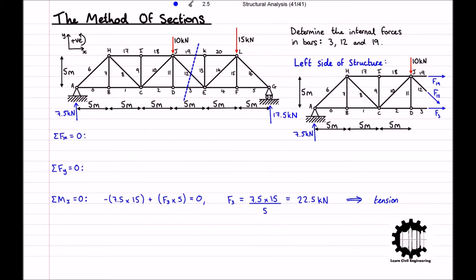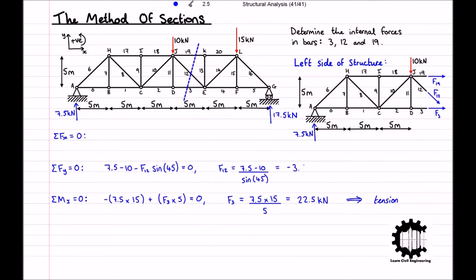Taking the y-coordinate direction to be positive, the sum of all vertical forces equals 7.5 minus 10 minus F12 times sine 45, which equals zero. We only have one unknown, so we can solve immediately. Rearranging for F12, F12 equals 7.5 minus 10 all divided by sine 45, which equals negative 3.45 kilonewtons. As the internal force is negative, that means bar 12 is under compression.